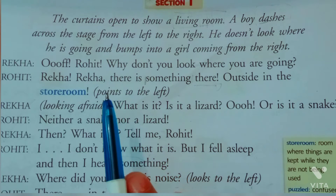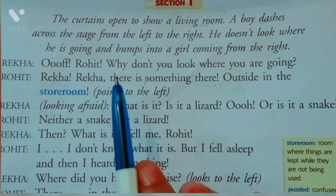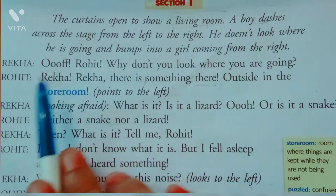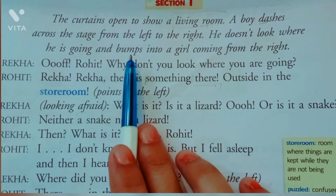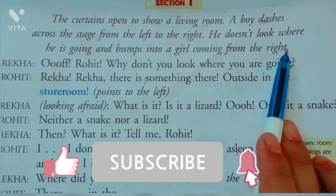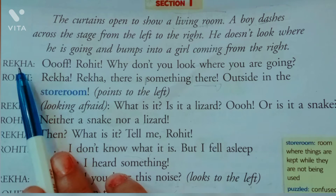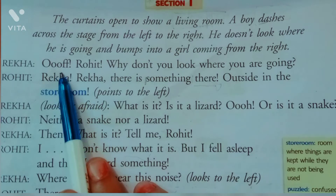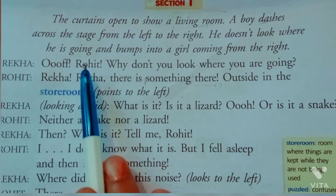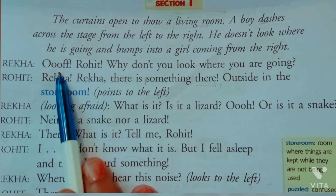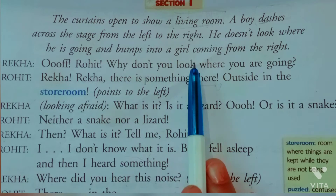Jis tarah se kai baar hota hai — hum chalte toh seedhe hain lekin hamaara dhyan idhar udhar hota hai, aur agar koi aage se aa jaaye toh hum usse takra jaate hain. Bumps ka matlab hai takrana. Woh ladka Rekha se takra jaata hai. Rekha boli — 'Uff Rohit, why don't you look where you are going?' — kyun nahi dekhte tum kahaan ja rahe ho.